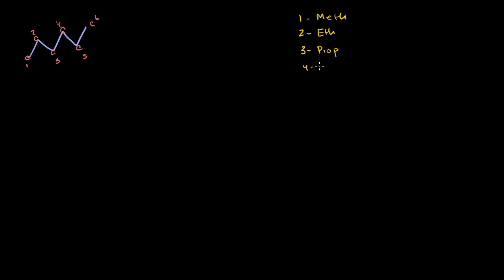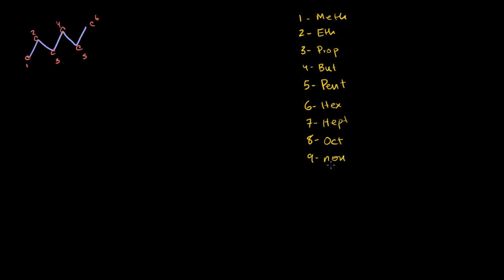For 4 carbons, you're talking about but. For 5 and above, it kind of becomes the traditional prefixes we associate with these numbers. At 5 it's pent, like pentagon. At 6 it's hex, like hexagon. 7 is hept. 8 is oct, like octagon. 9 is non. And 10 is dec.